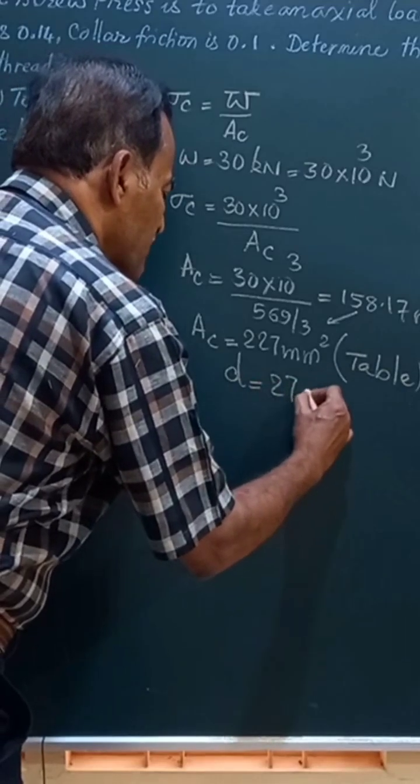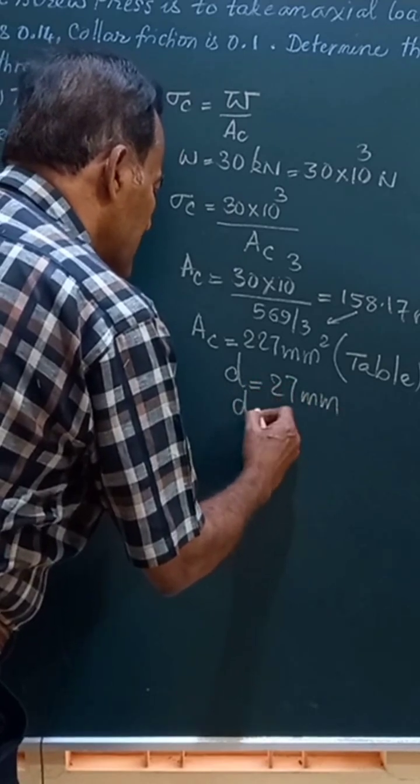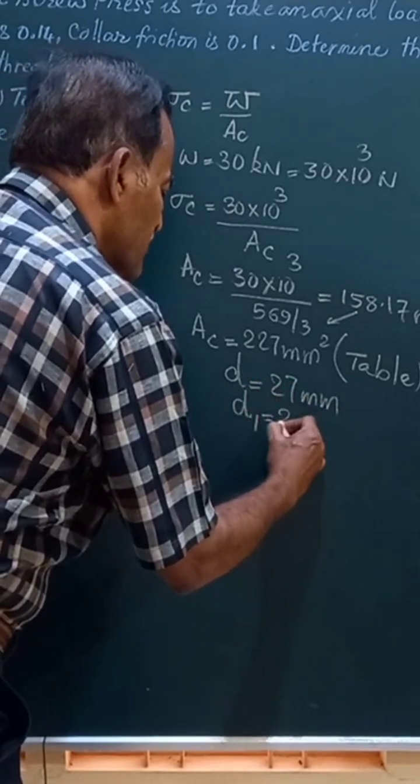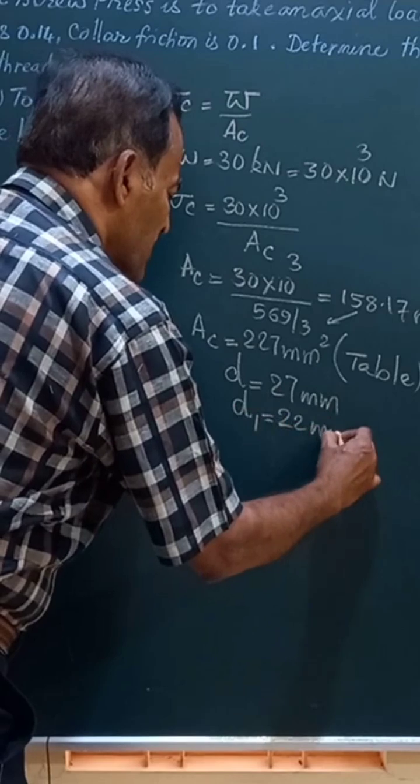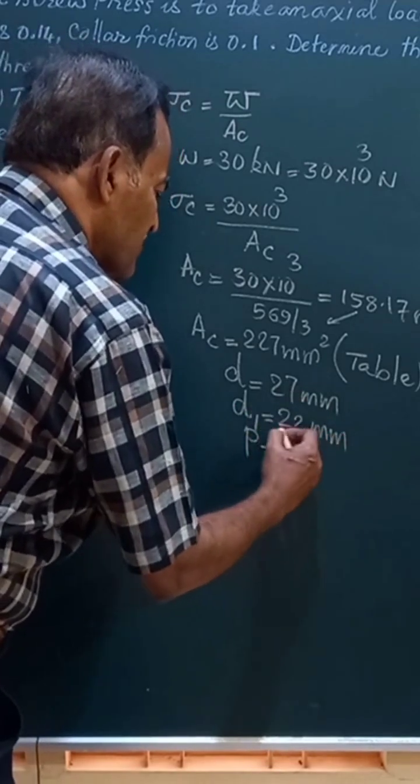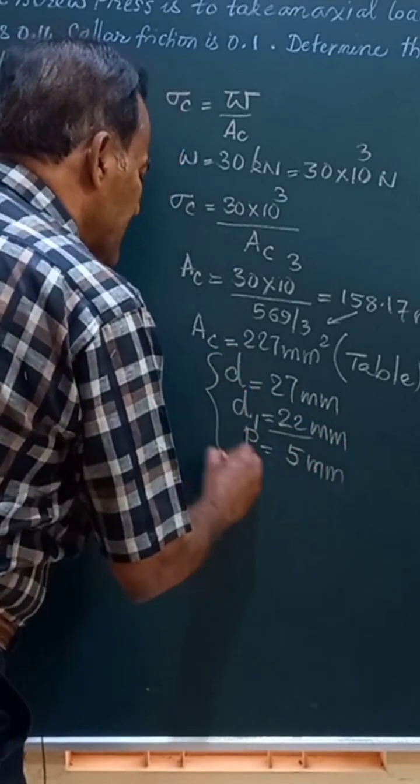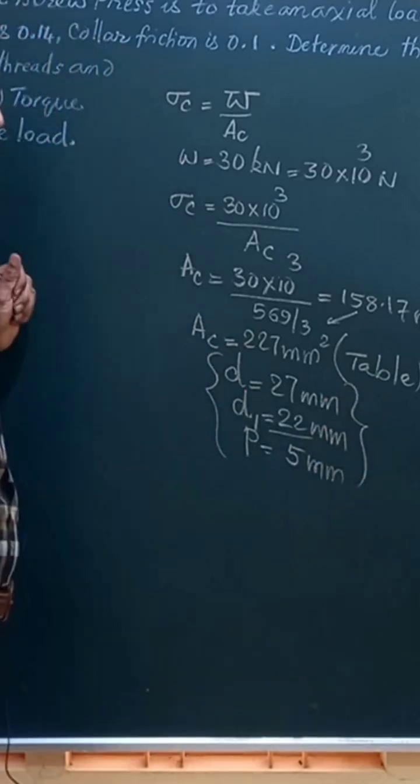is equal to 27 mm, the inside diameter that is b1 is equal to 22 mm, and the pitch of this is the difference of these two, that is 5 mm. These are the dimensions of the screw rod.